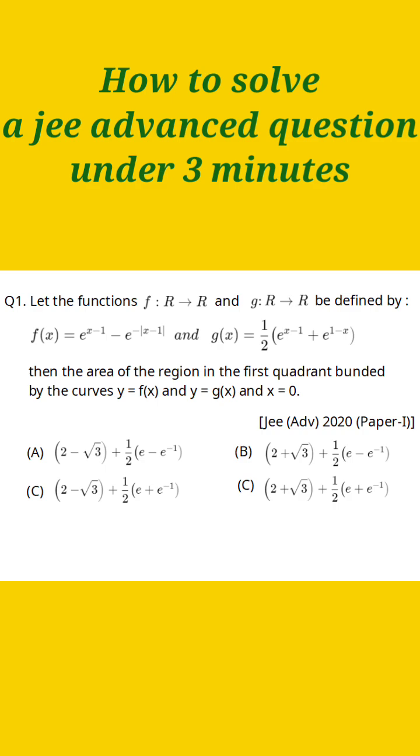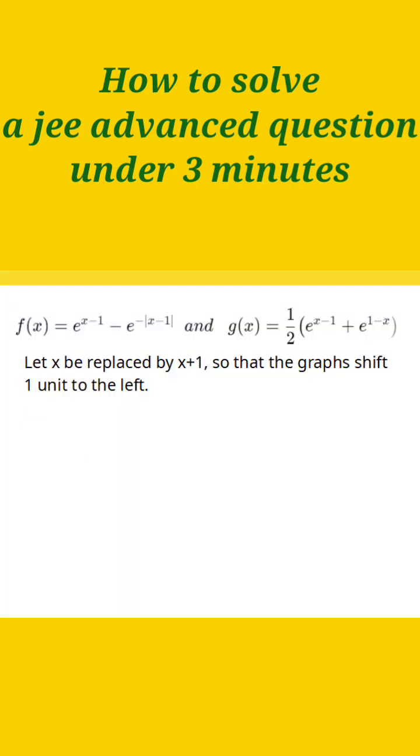Let the functions f and g be defined as shown, then the area of the region in the first quadrant bounded by the curves and x equal to 0. Now x equal to 0 means y-axis, so we have to find the area starting from x equal to 0 till their first point of intersection.